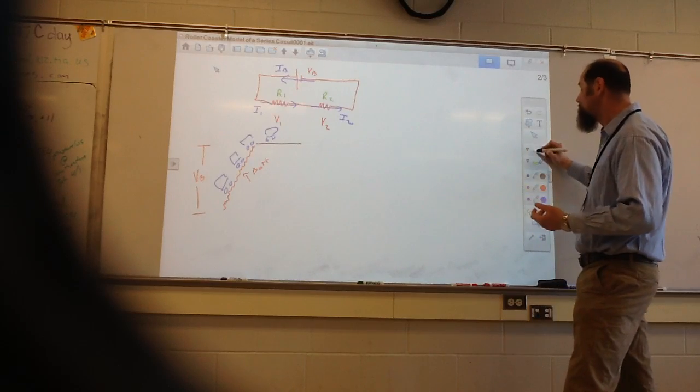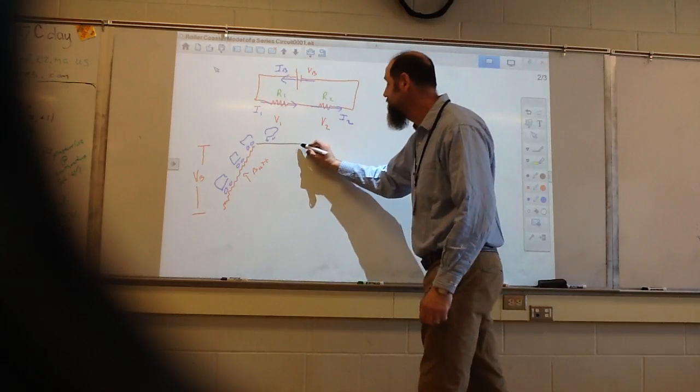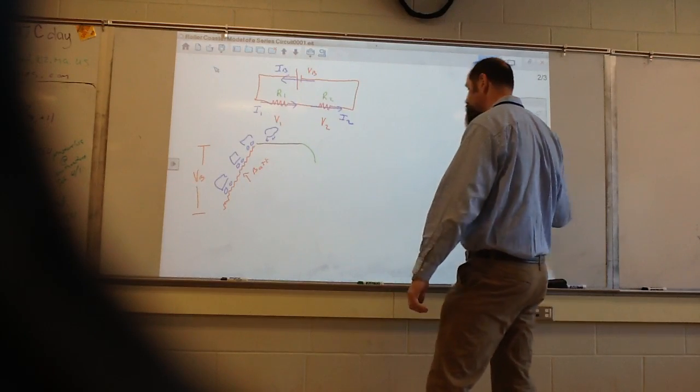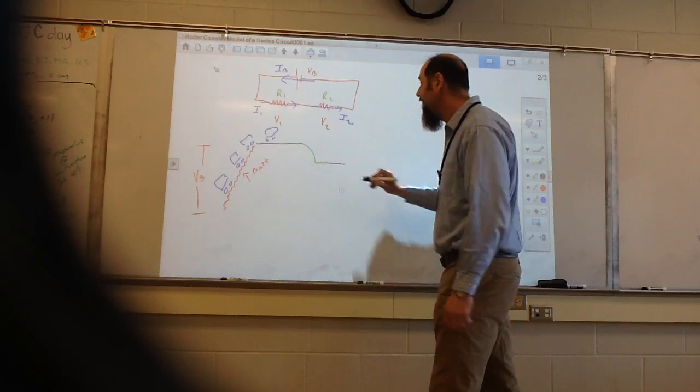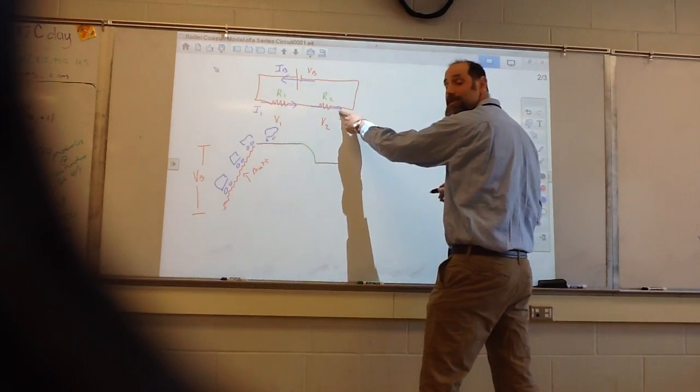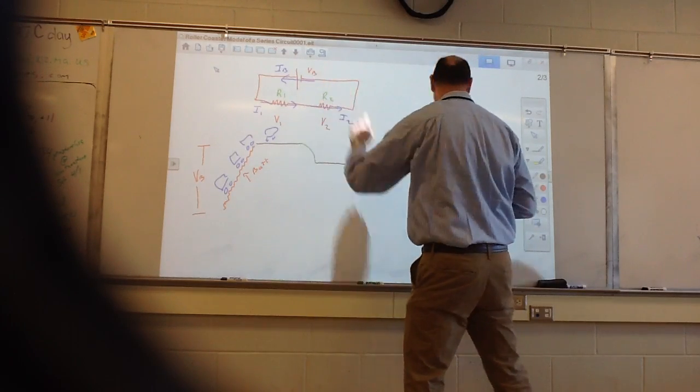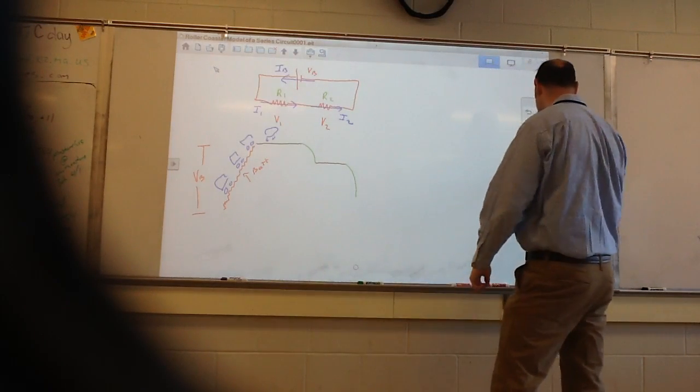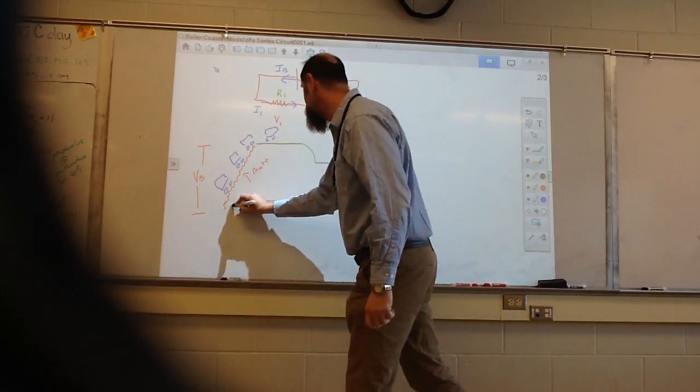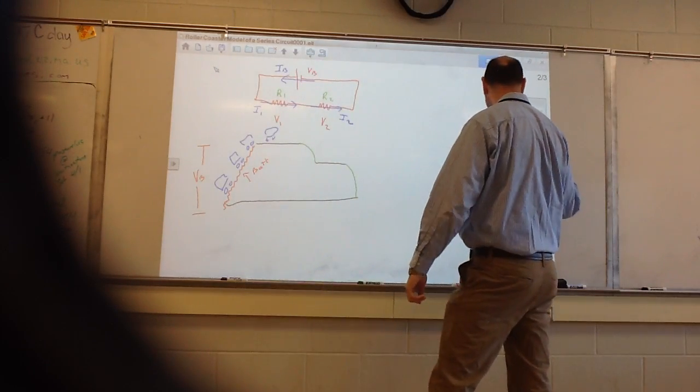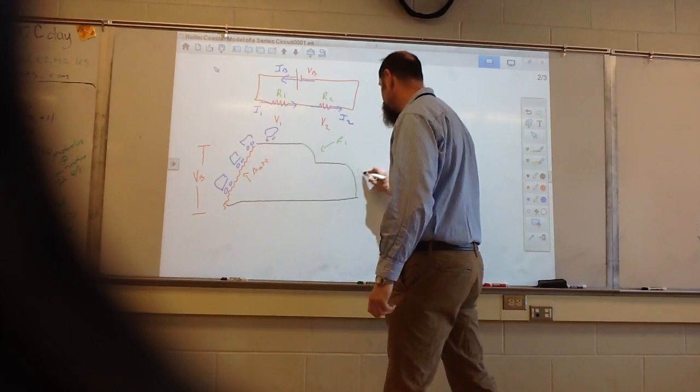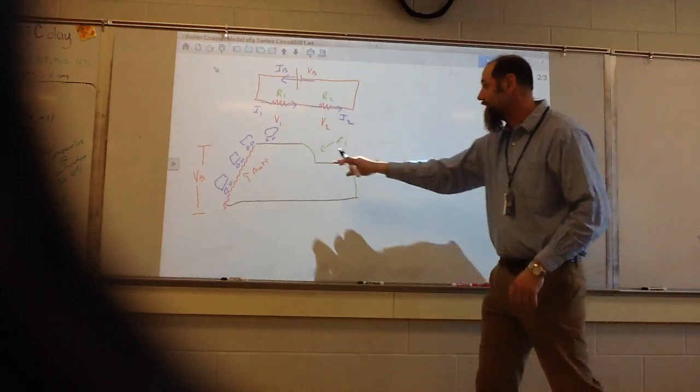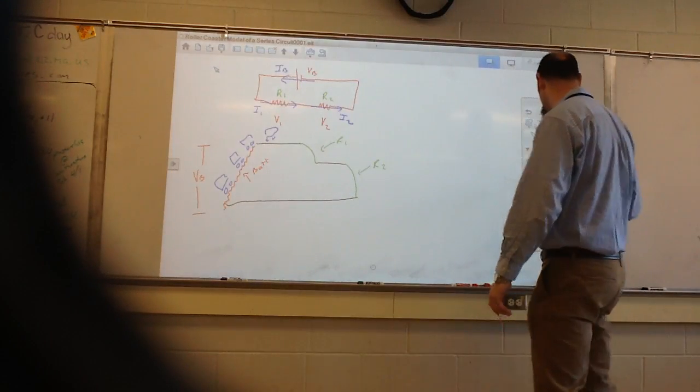So resistor one, maybe it drops this far down. And then we go along the track, and then resistor two brings you back to the bottom of the hill. And then we're right back at the bottom. So that would be resistor one, that would be resistor two. So if we look at this, here's our track, and we start looking at the heights.